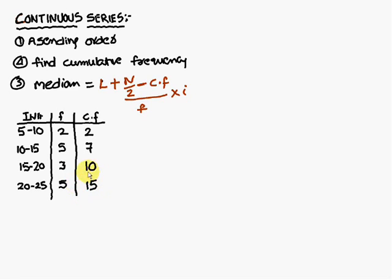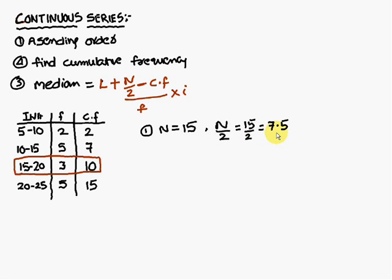This 15 you call it as the N, capital N. Therefore capital N is equal to 15. So here in the formula you require N by 2. Therefore N by 2 is 15 by 2, that is 7.5.